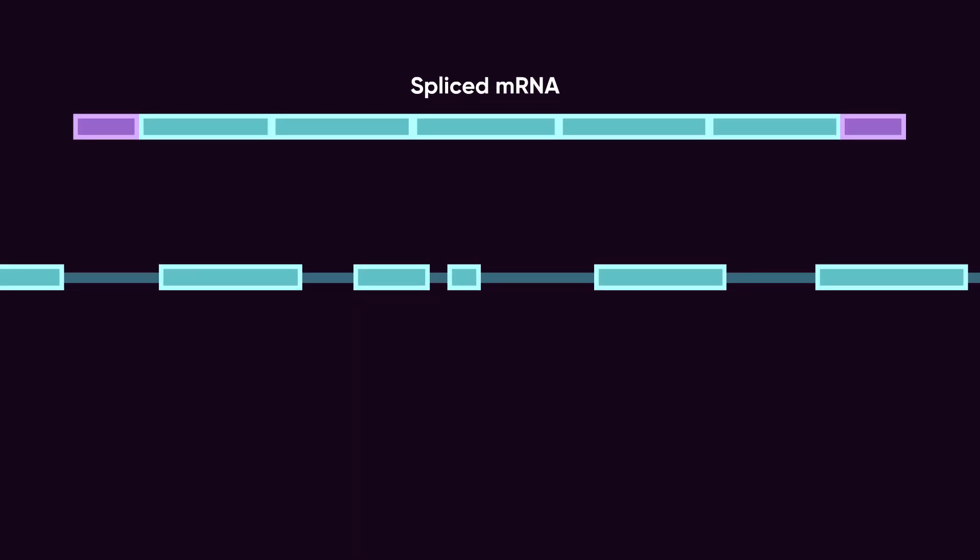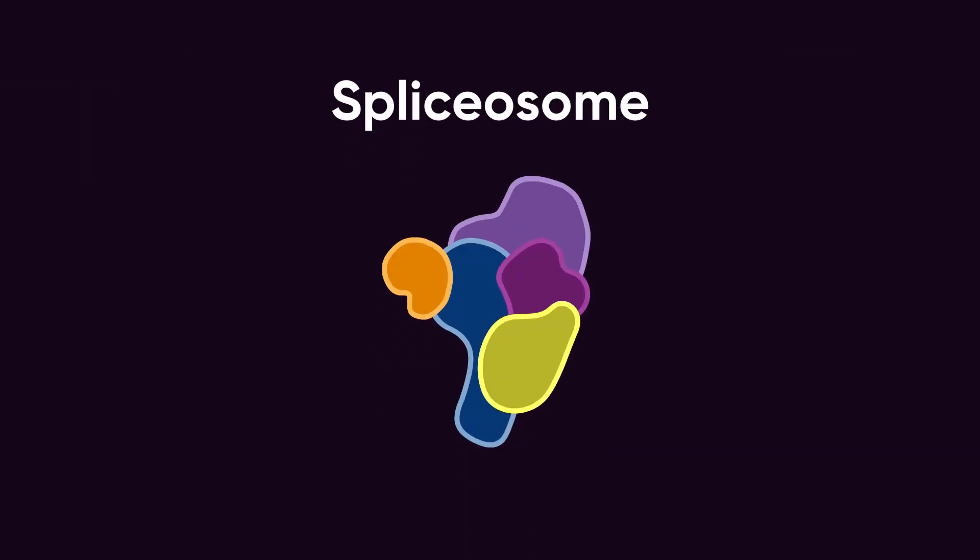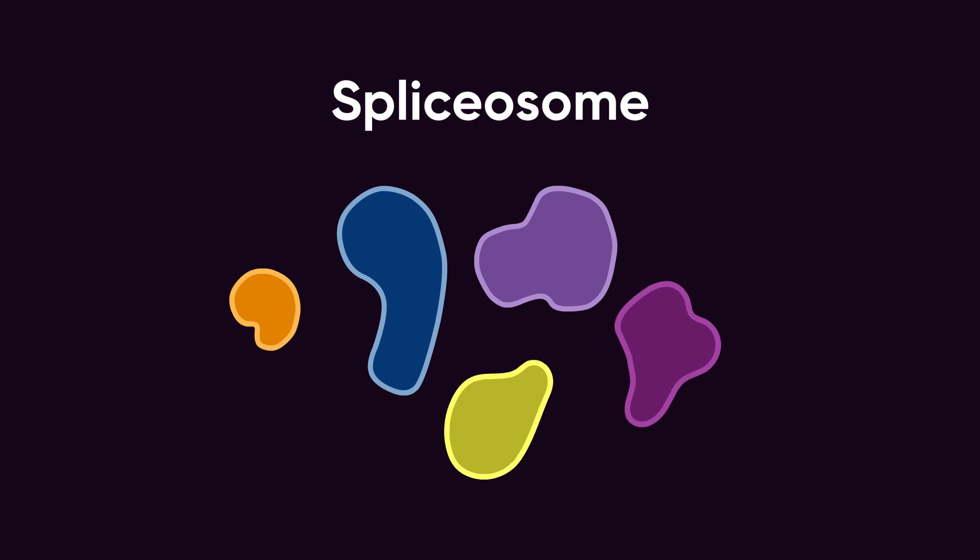But some genes have as many as 300 introns and some have none. The spliceosome is a complex of proteins and RNA protein structures called SNRPs, short for Small Nuclear Ribonucleoproteins.